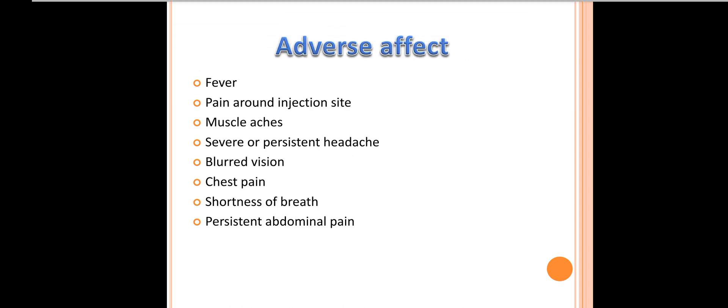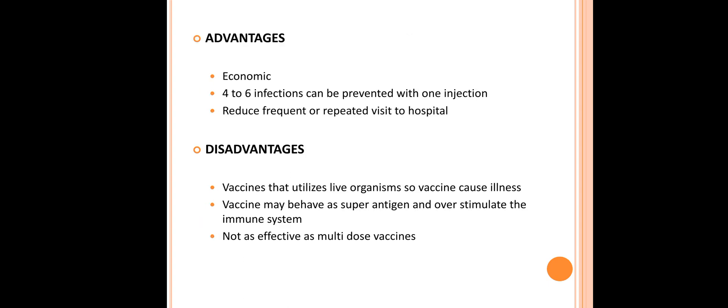There are some adverse effects of single shot vaccination similar to conventional vaccination, such as fever, pain around the injection site, muscle aches, severe or persistent headache, blurred vision, chest pain, shortness of breath, and persistent abnormal pain. However, these generally do not occur — only fever and pain are common. Single shot vaccination is economical as no booster doses are required, four to six infections can be prevented with one injection, it is convenient, and it reduces frequent or repeated visits to the hospital.